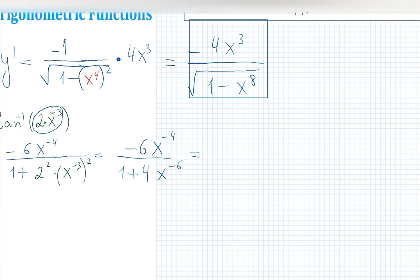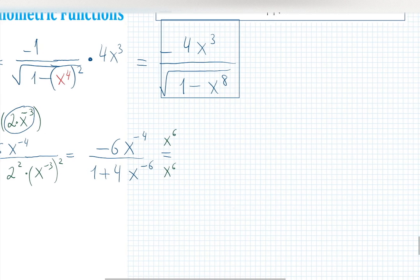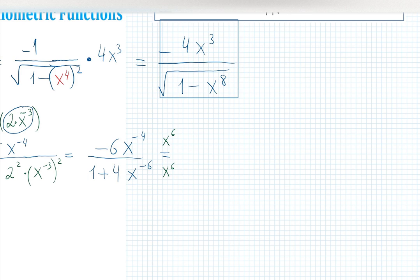We actually could leave it like this, but I can see that the answer doesn't have any negative exponents, which means they multiplied everything by x to the 6. If I multiply the top by x⁶ and the bottom by x⁶, it will get rid of all negative exponents.